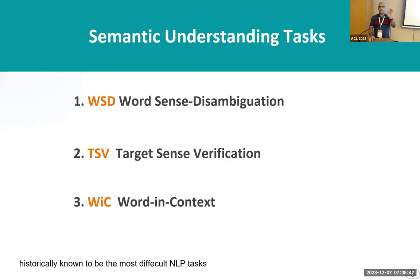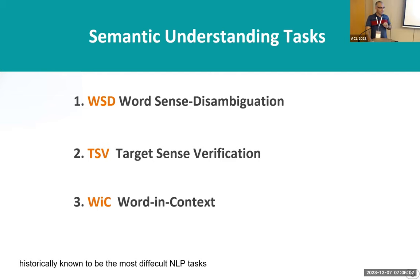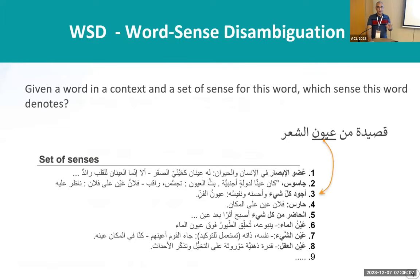Let me take your attention for two minutes to give an introduction about this work and the state of the art before presenting our work. There are three downstream tasks. One is called WSD, one is called TSV, and another one is called WIC. Three tasks related to semantic understanding. The first one, WSD: given a context and a word in this context, we want to know which meaning is the correct meaning for this word — which sense. This is called WSD.